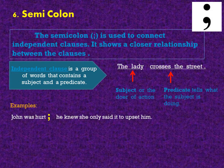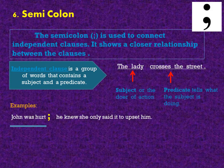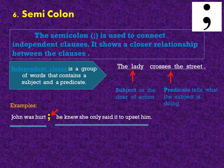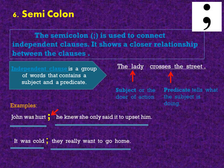For example: John was hurt; he knew she only said it to upset him. This is one sentence but it is divided into two independent clauses. First: John was hurt. Second: He knew she only said it to upset him. And they are connected by a semicolon. Another example: It was cold; they really want to go home. The first independent clause is: It was cold. The second is: They really want to go home. And it is connected by a semicolon.